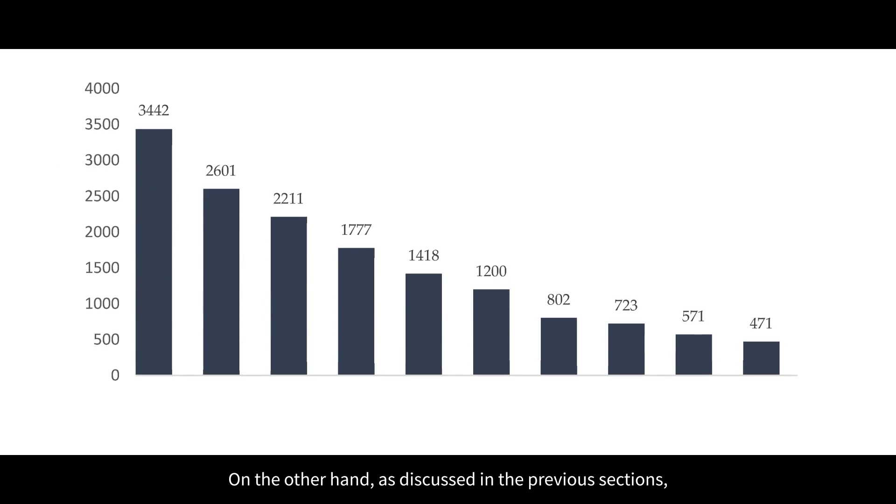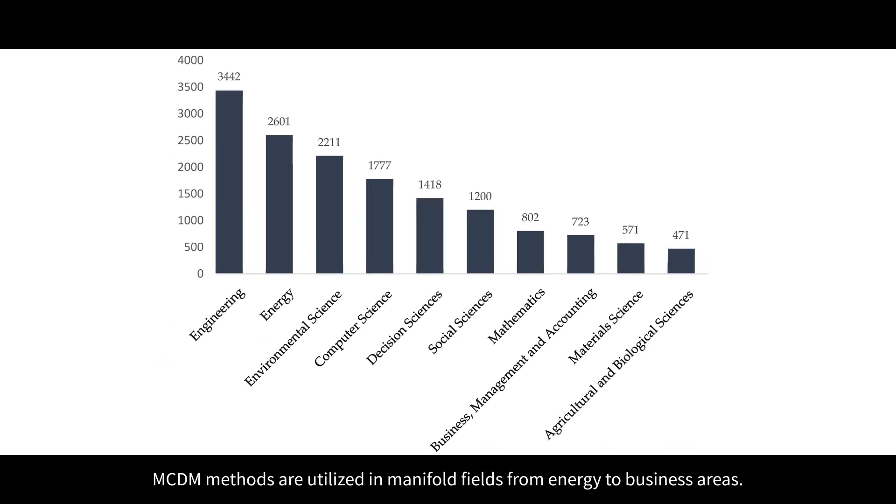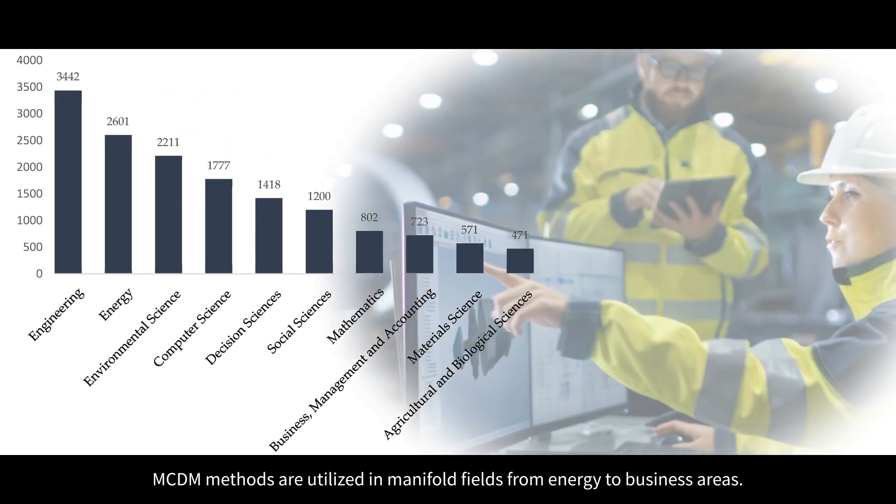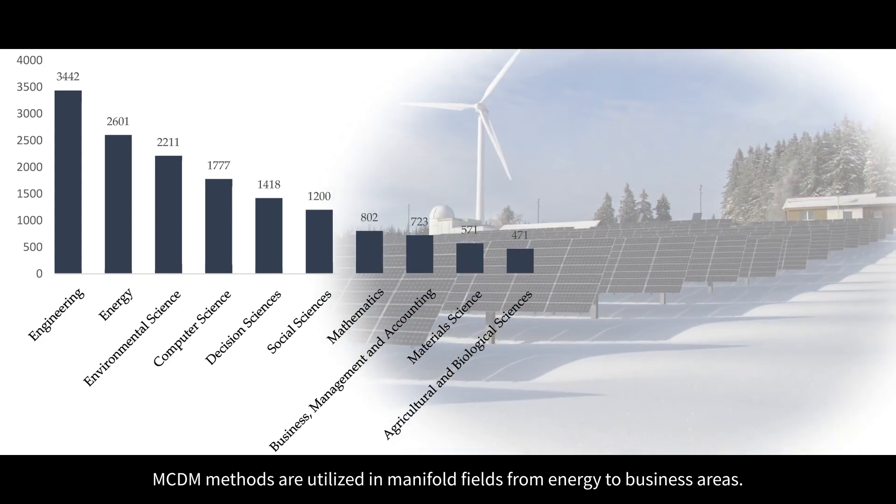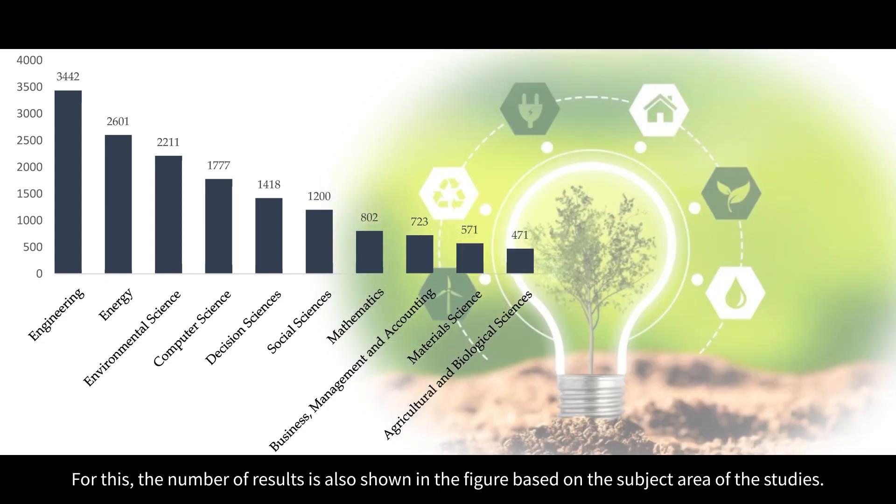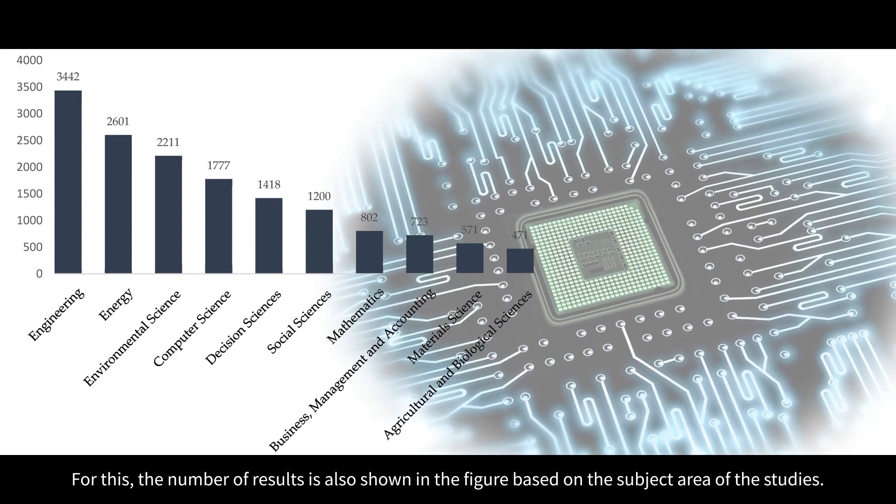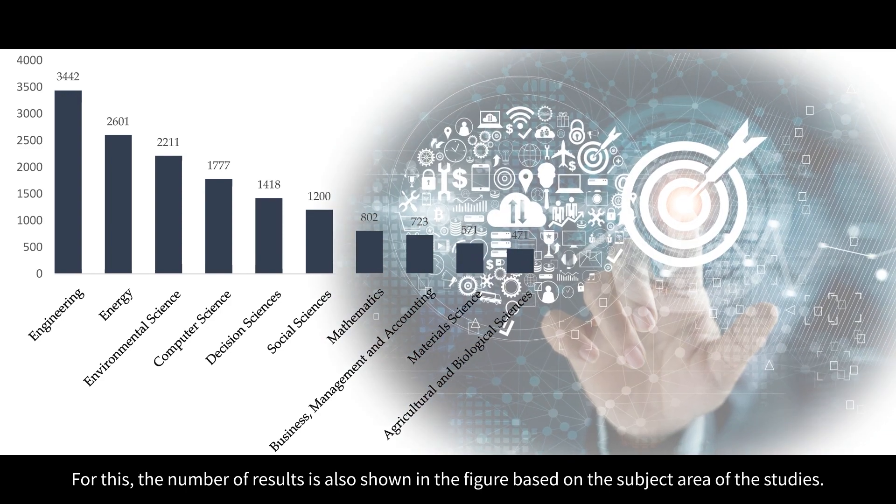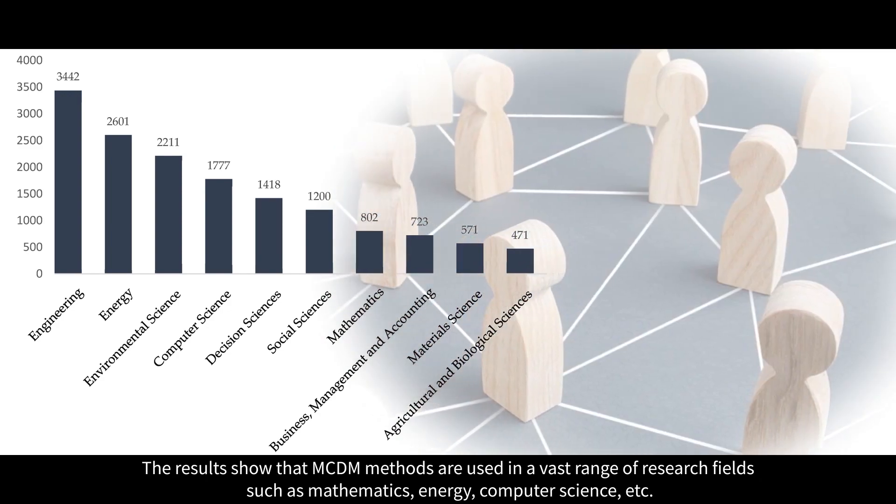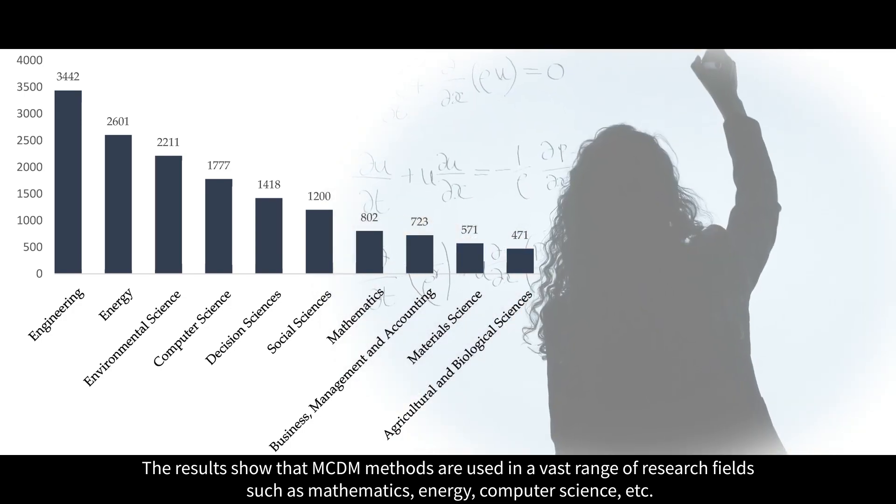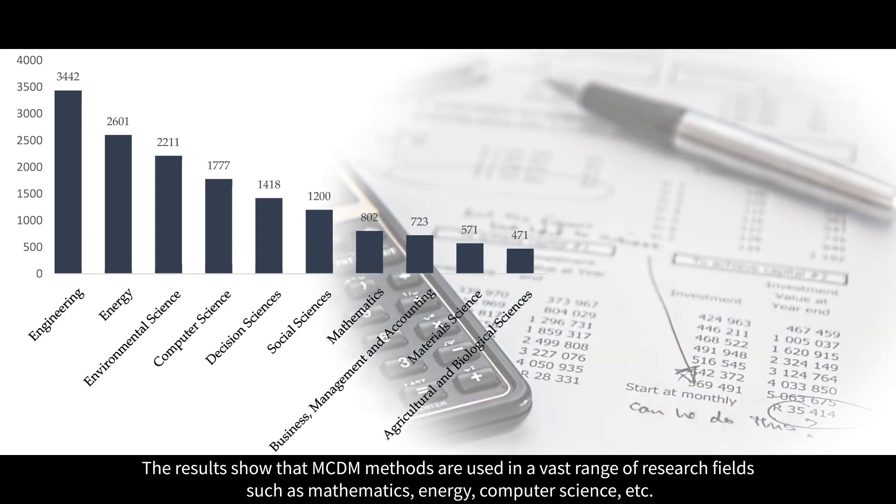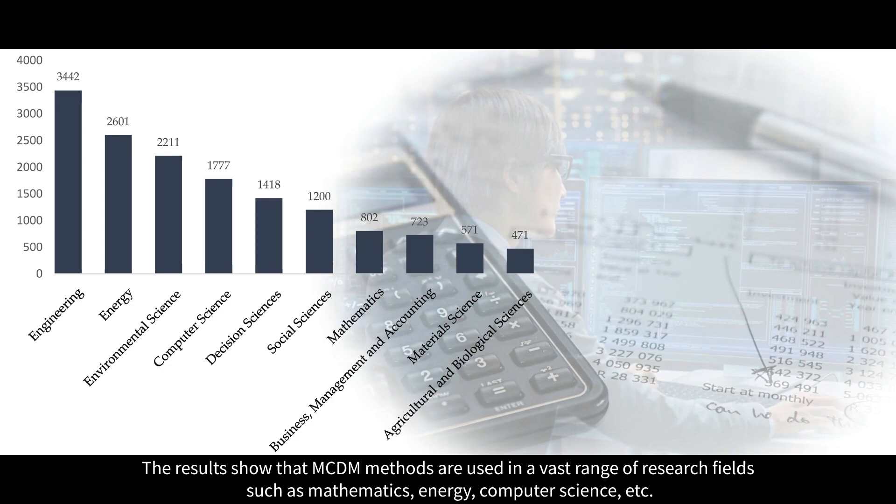On the other hand, as discussed in the previous sections, MCDM methods are utilized in manifold fields from energy to business areas. For this, the number of results is also shown in the figure based on the subject area of the studies. The results show that MCDM methods are used in a vast range of research fields such as mathematics, energy, computer science, etc.